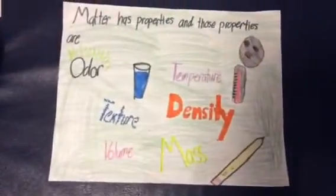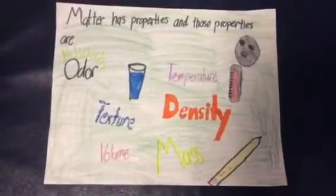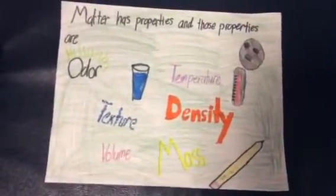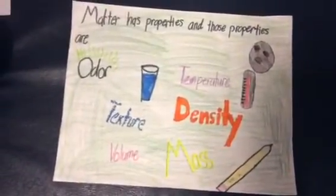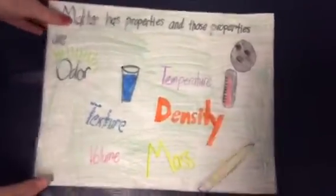Matter has properties, and those properties are odor, temperature, texture, density, volume, and mass.